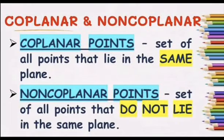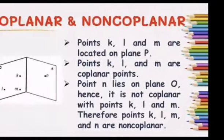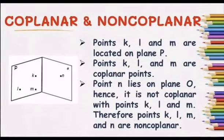The first two defined terms are coplanar and non-coplanar points. Coplanar points is a set of all points that lie in the same plane. Non-coplanar points is a set of all points that do not lie in the same plane. Example: points K, L, and M are located on plane B. Points K, L, and M are coplanar points. Point N lies on plane O. Hence, it is not coplanar with points K, L, and M. Therefore, points K, L, M, and N are non-coplanar.